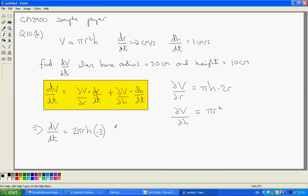Plus partial V by H, which is pi R squared times dH by dt, which is 1.